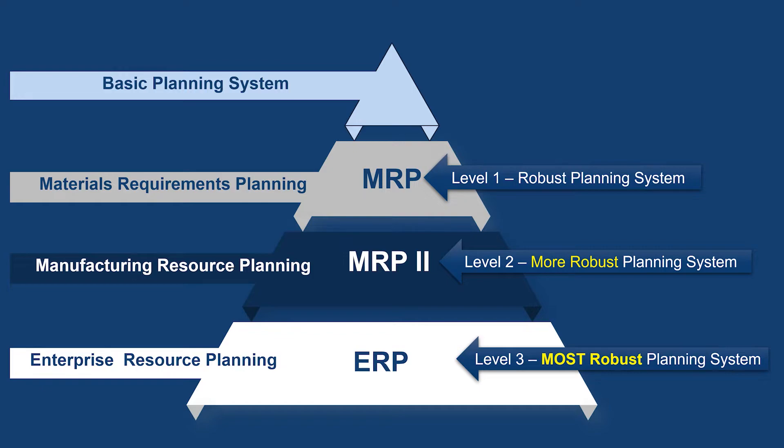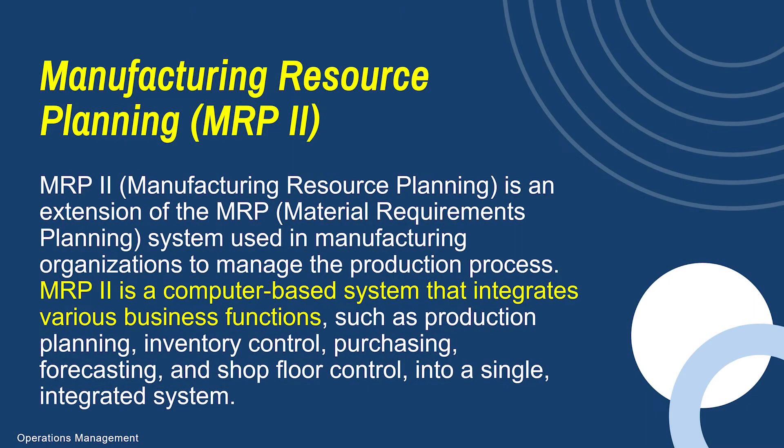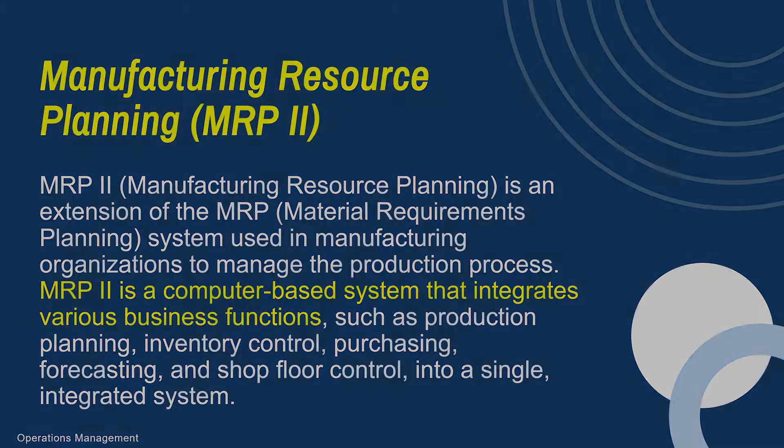When we graduate from MRP to MRP2, MRP2 is actually manufacturing resource planning. There are other aspects of planning that go into MRP2. MRP is all about tracking material — can we track it in the system, do we know when we'll receive it? But when things get more complex and we want to add forecasting or marketing and sales into the mix, we have to graduate from MRP to MRP2.